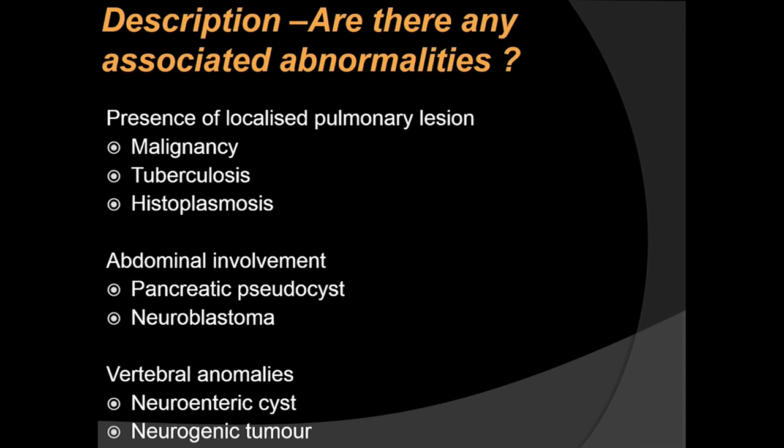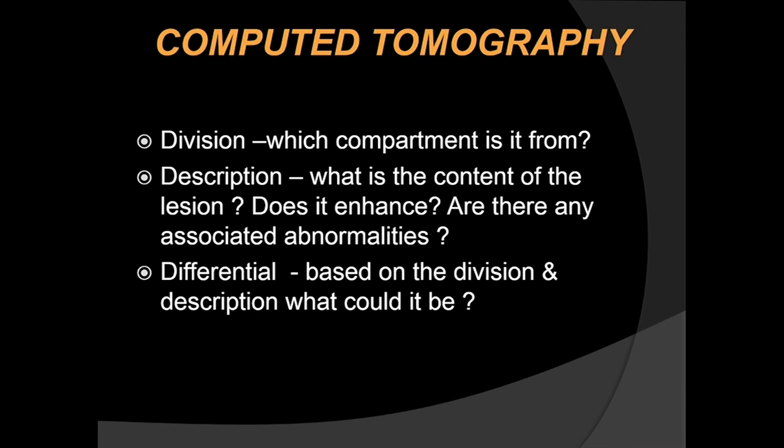We should also look for associated abnormalities: localized pulmonary lesions in addition to mediastinal abnormalities, as occurs in malignancies and tuberculosis; abnormal abdominal involvement in addition to thoracic findings, as with a thoracic psoas cyst or neuroblastoma; and associated vertebral anomalies such as neuroenteric cysts and neurogenic tumors.